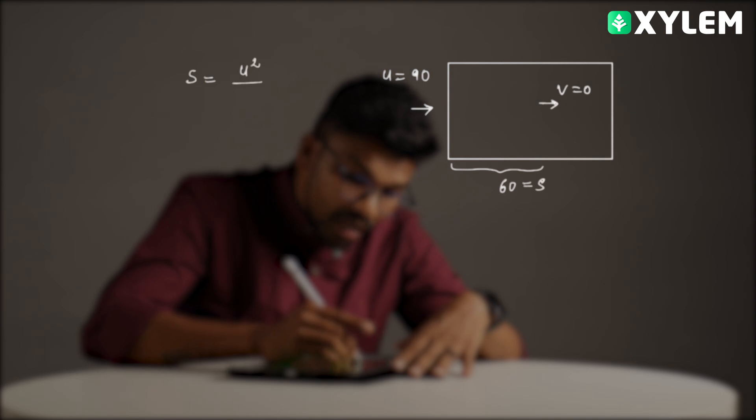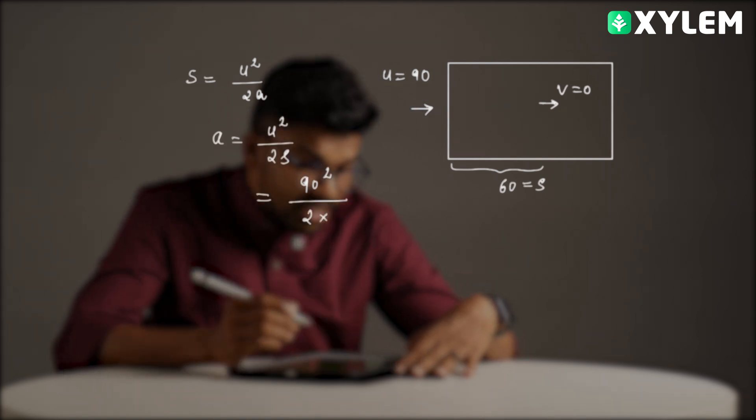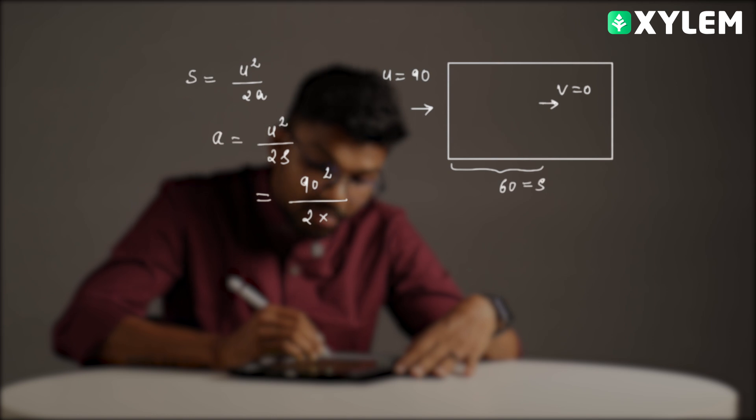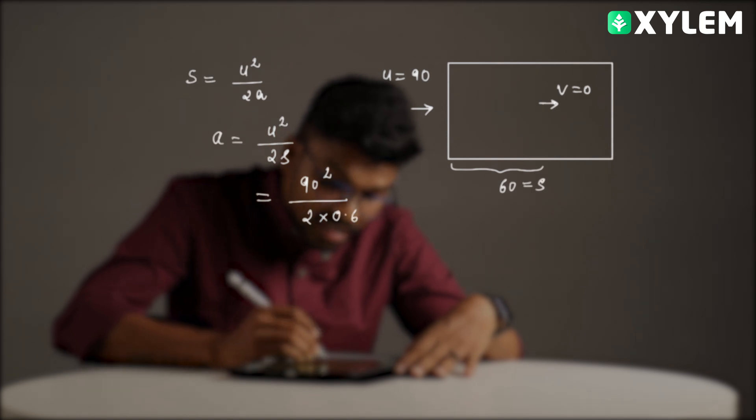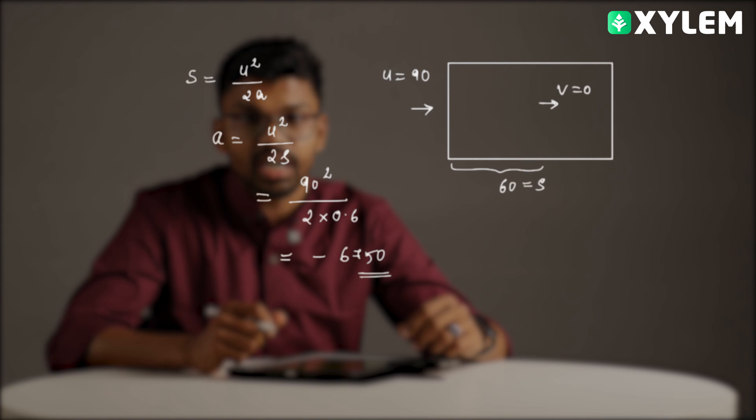The final velocity is 0. That's what we call a stopping distance. Stopping distance S is equal to U square by 2A. That's what we call a retardation. U square divided by 2S. U is 90, so 90 squared divided by 2 into S is equal to 60 cm converted to 0.6 meters. So this is 2x. We will see the answer. Minus 6750. Minus indicates that it is a retardation.